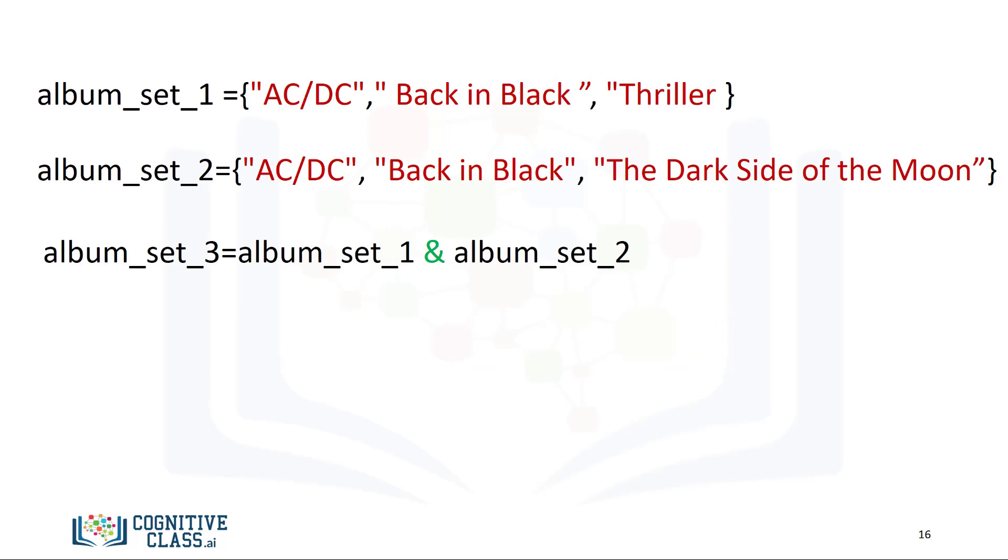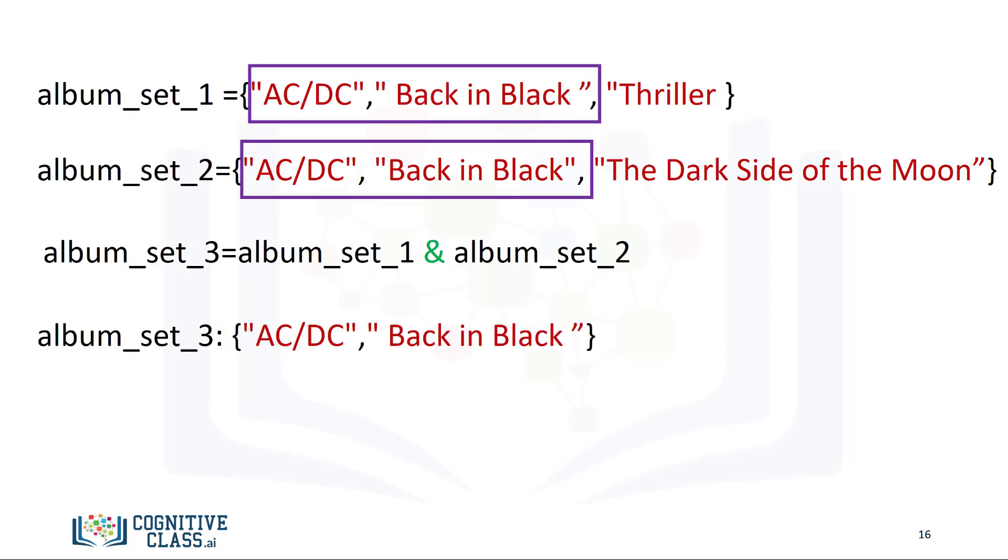In Python, we simply just place the ampersand between the two sets. We see that both ACDC and Back in Black are in both sets. The result is a new set album set 3, containing all the elements in both album set 1 and album set 2.